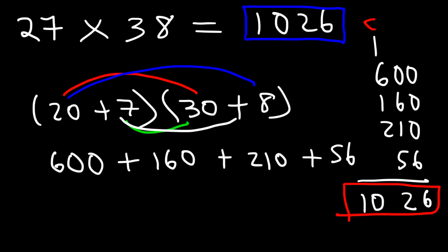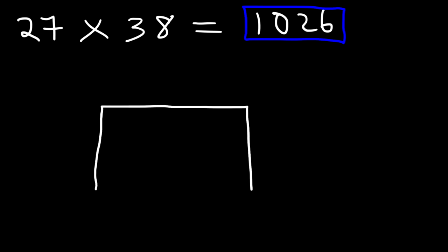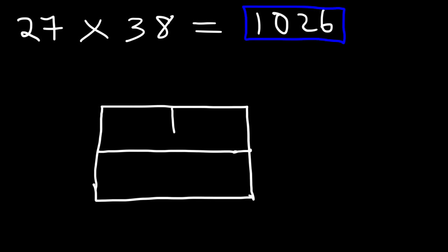Another way to multiply is the area model. Since 27 and 38 are both two-digit numbers, we draw a table with two columns and two rows. We write 27 as 20 plus 7 and 38 as 30 plus 8. This has the same effect as the distributive property but is just another way to do multiplication.